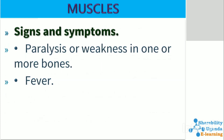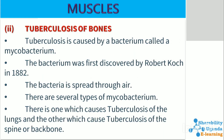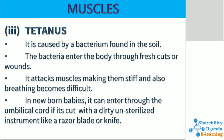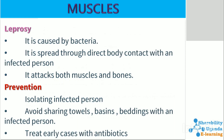Diseases and disorders associated with the skeletal and muscular system include polio, tuberculosis, and tetanus, among many others. For example, tuberculosis is caused by a bacterium. It is spread through direct body contact with an infected person and attacks both muscles and bones. It is prevented by isolating infected persons and avoiding sharing towels, basins, and beddings. Early cases are treated with antibiotics.